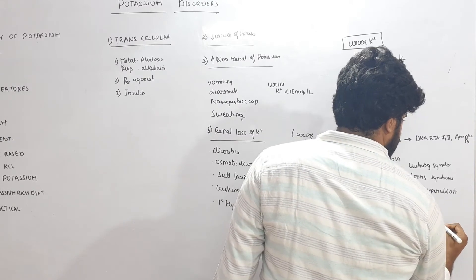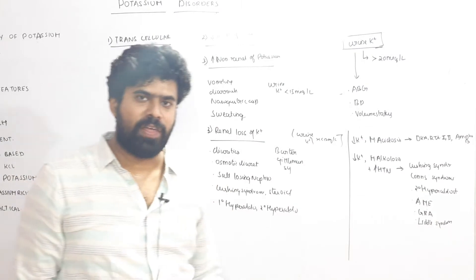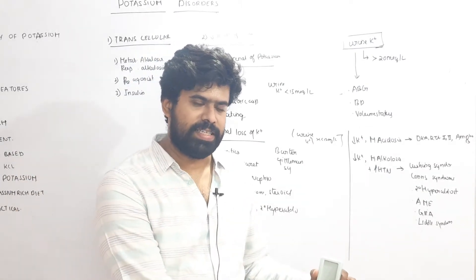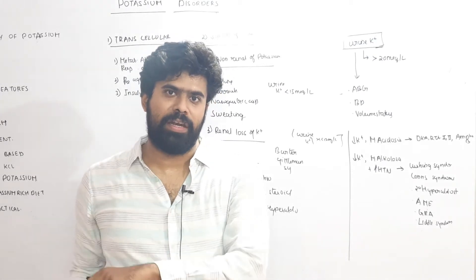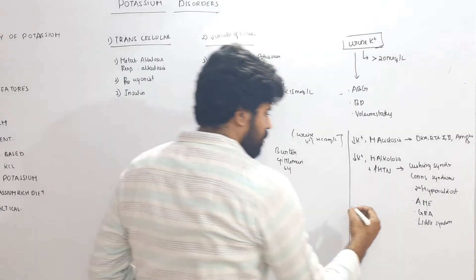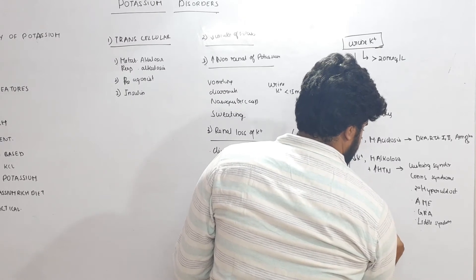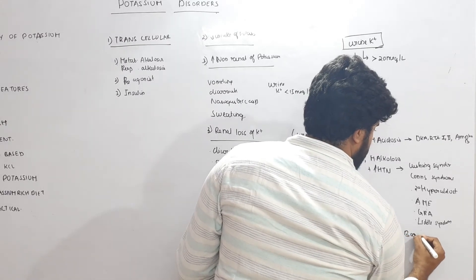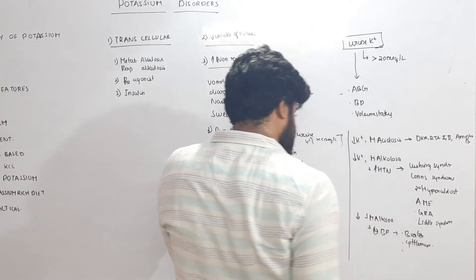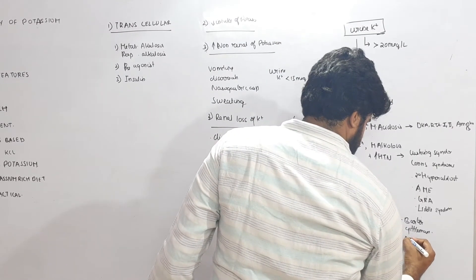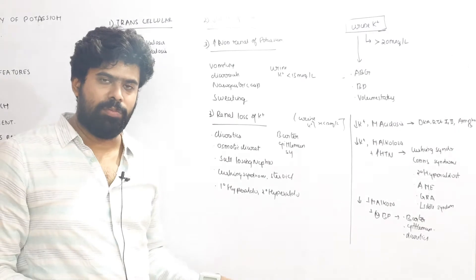Other conditions with hypokalemia include Liddle syndrome. To approach a patient with hypokalemia: first repeat potassium values for consistency; second, do an ABG to check for acidosis or alkalosis; third, measure blood pressure. If there is hypokalemia plus metabolic alkalosis plus normal blood pressure, think of Bartter syndrome, Gitelman syndrome, vomiting, or diuretics.